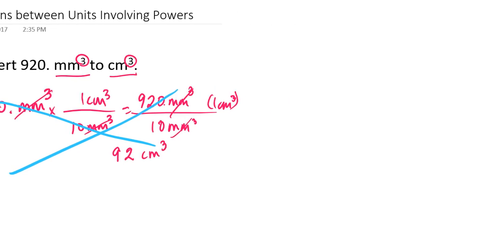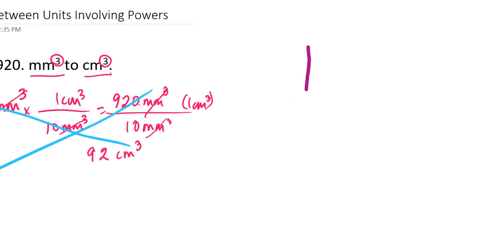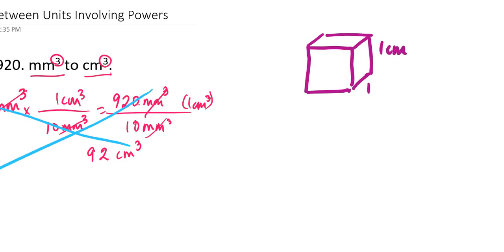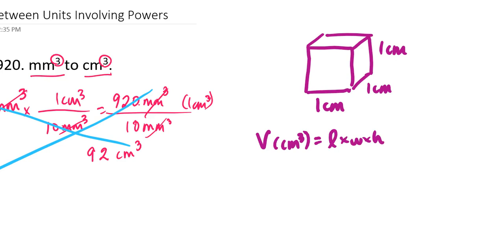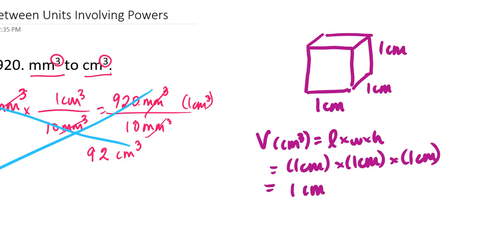I want you to consider the following. Let's pretend we have a cube, and this cube has sides that each measure 1 centimeter. If I wanted to calculate the volume of this cube in units of centimeters cubed, we know that volume is length times width times height. So that would be 1 centimeter multiplied by 1 centimeter multiplied by 1 centimeter, and I get 1 centimeter cubed.